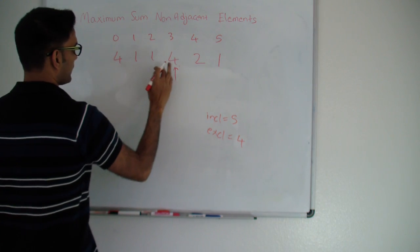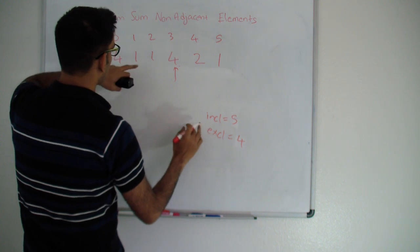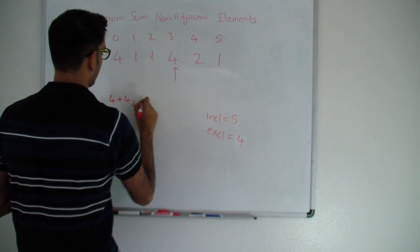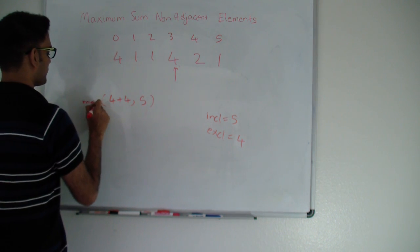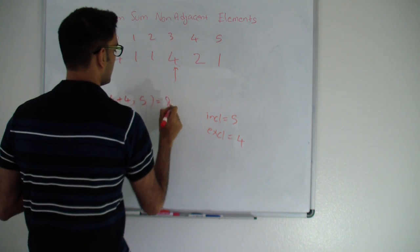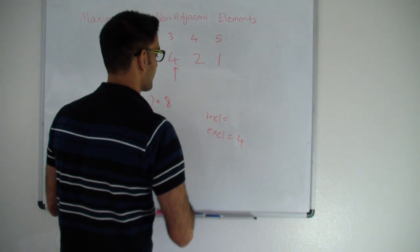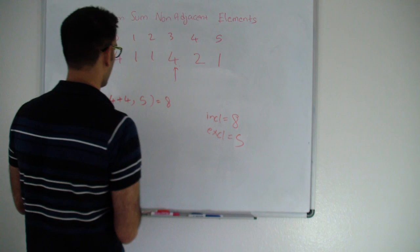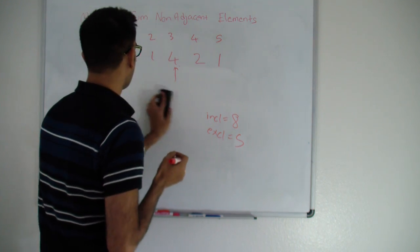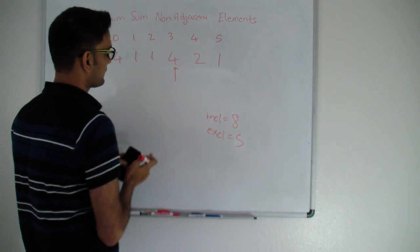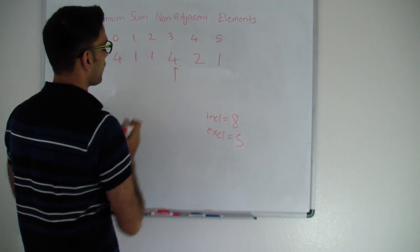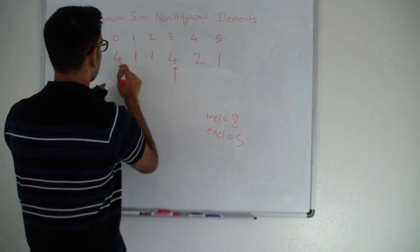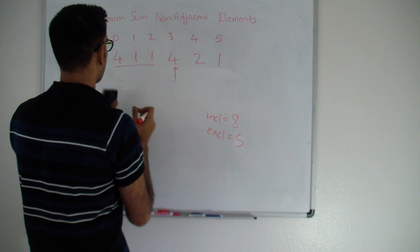Moving one more step: my new inclusive is max(old exclusive + current value, old inclusive) = max(4+4, 5) = 8. My new exclusive becomes the old inclusive which is 5. This means including this element the best I can do is 8 (4+4, since they're non-adjacent), and excluding this number the best I can do up to this point is 5 (which was 1+4).